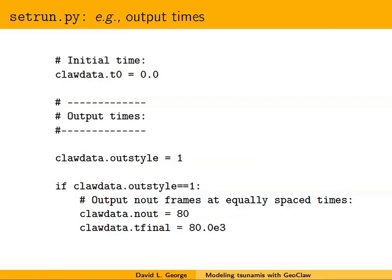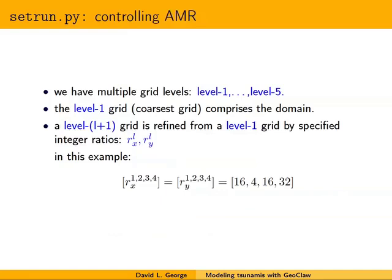Output is specified with several options for when the solution is output and how many times. We call these out styles one, two, and three. If you select out style one, the solution will be output at equally spaced times—you choose how many times. The end of the computation is effectively determined by the specification of the output, since if you're not outputting a solution there's usually no reason to keep running.